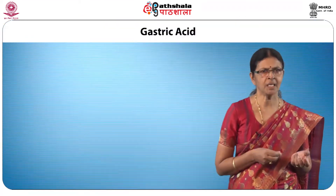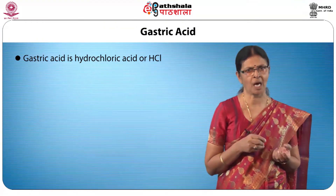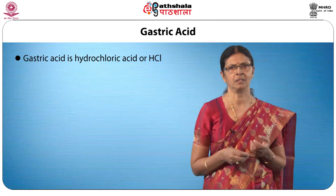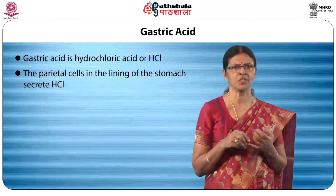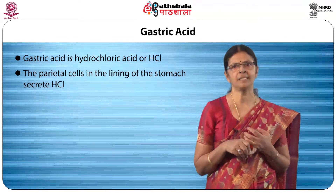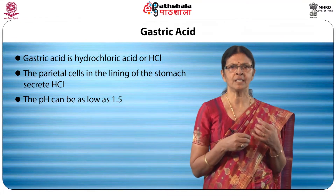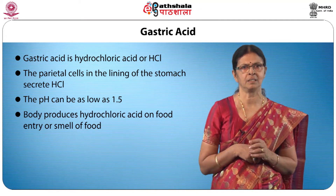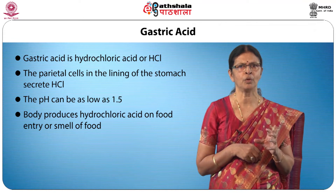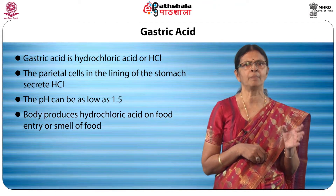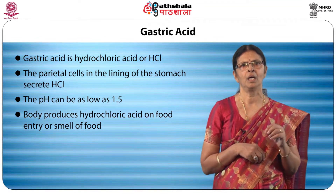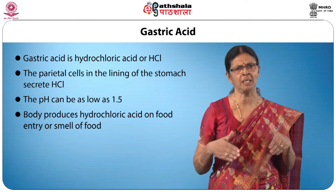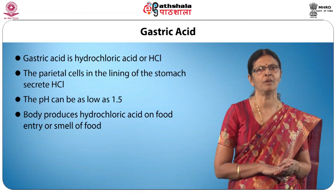We have been talking about gastric acid and gastric juice. Gastric acid is referred to as hydrochloric acid, or HCl. The parietal cells in the lining of the stomach secrete hydrochloric acid, and the pH can be as low as 1.5. When food enters the mouth or when you start smelling food, the body produces hydrochloric acid. If too much acid is produced in the stomach, it causes pain and requires medication to inactivate the production of HCl.